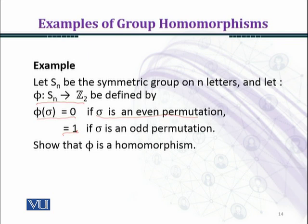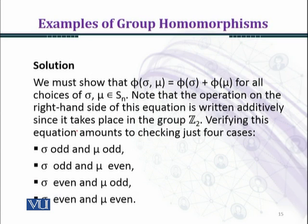Show that phi is a homomorphism. Solution: we must show that phi(σ, μ) equals phi(σ) plus phi(μ). As you can see, we have images which are added because Z2 is an additive group.